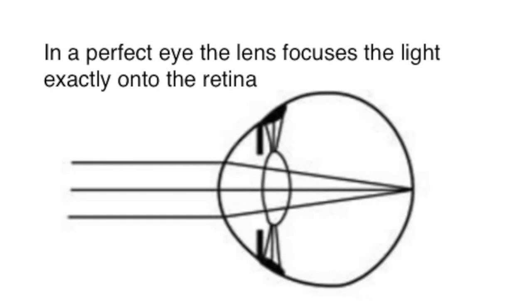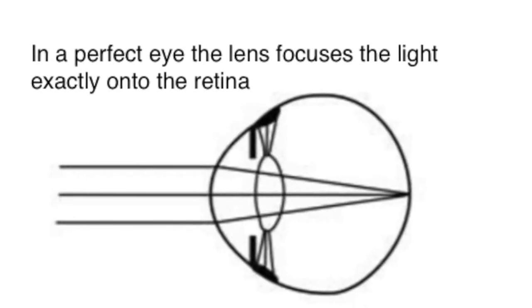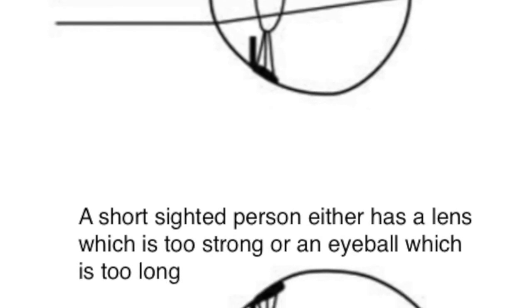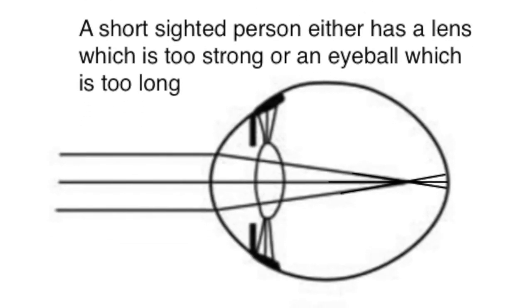Rather more important than that is the use of a diverging lens in correcting short-sightedness. Here's a simple diagram of a perfect eye where the light from a distant object is focused by the lens within the eye onto the retina at the back. But unfortunately many people's eyes are not perfect, including mine, and like many I am short-sighted.